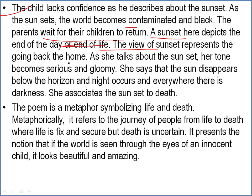The view of sunset represents going back home. As she talks about the sunset, her tone becomes serious and gloomy. She says the sun disappears below the horizon and night occurs, with darkness everywhere. She associates the sun with death — sunset to death. The poem is a metaphor symbolizing life and death; metaphorically it refers to the journey of people from life to death, where life is fixed and secure but death is uncertain. It presents the notion that if the world is seen through the eyes of an innocent child, it looks beautiful and amazing.